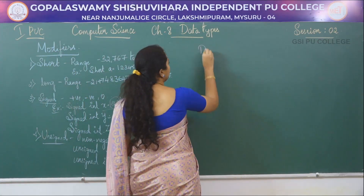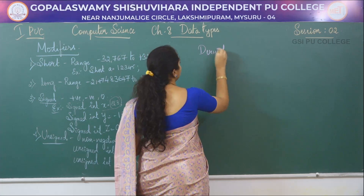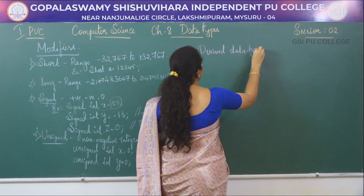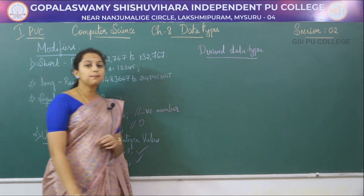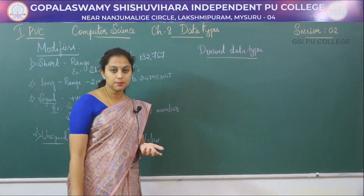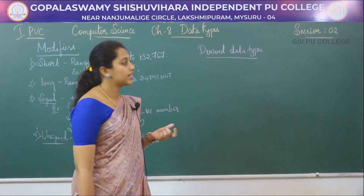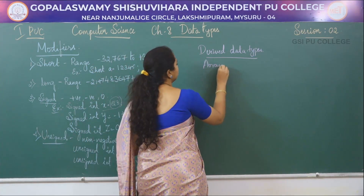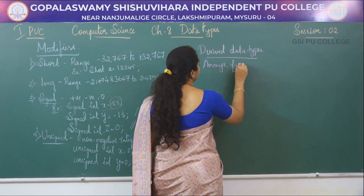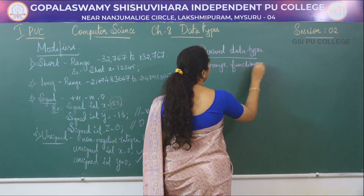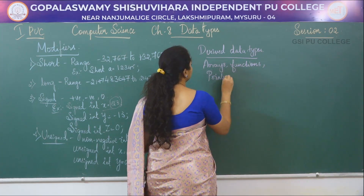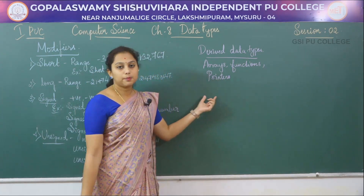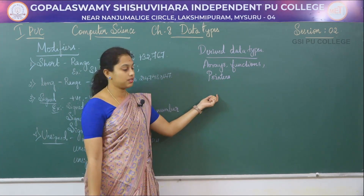The next type of data type is derived data type. A derived data type is a data type which is derived from simple or fundamental data types. Examples of derived data types are arrays, functions, pointers, etc. We shall study about these data types in detail in further chapters.